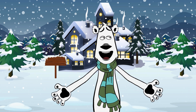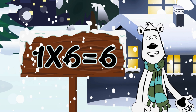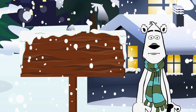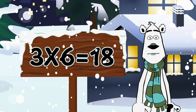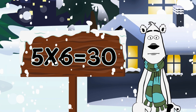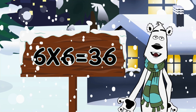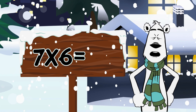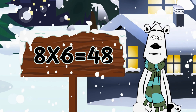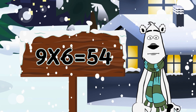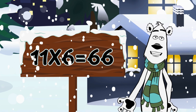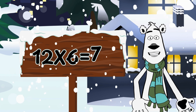Let's go over our numbers again to make sure we remember them. Six times one is six. Six times two is twelve. Six times three is eighteen. Six times four is twenty-four. Six times five is thirty. Six times six is thirty-six. Six times seven is forty-two. Six times eight is forty-eight. Six times nine is fifty-four. Six times ten is sixty. Six times eleven is sixty-six. Six times twelve is seventy-two.